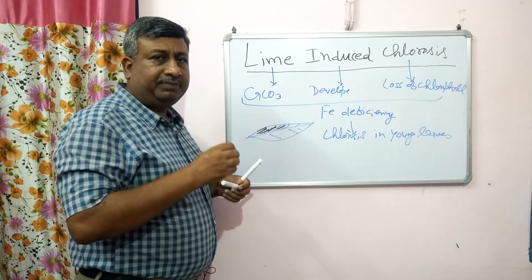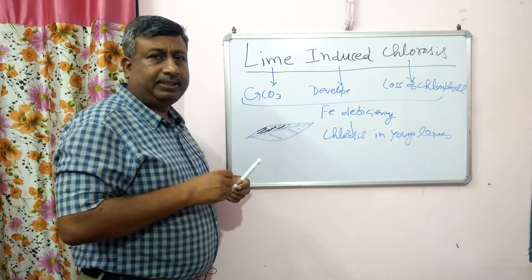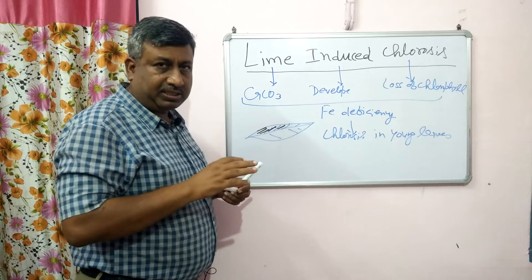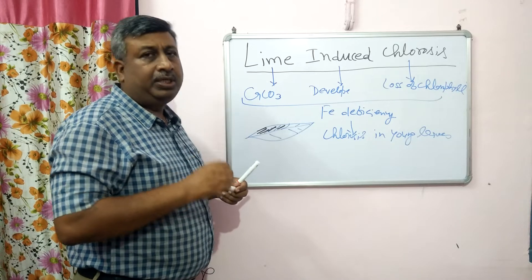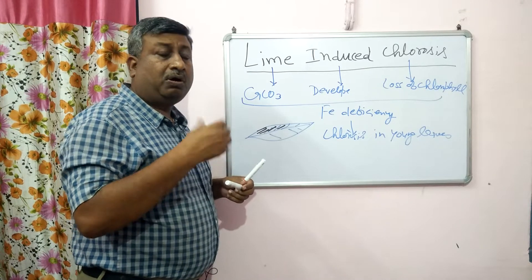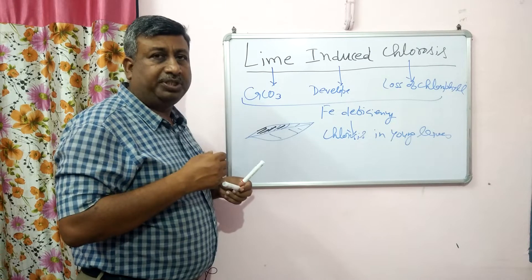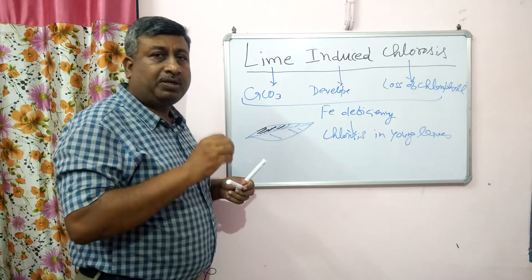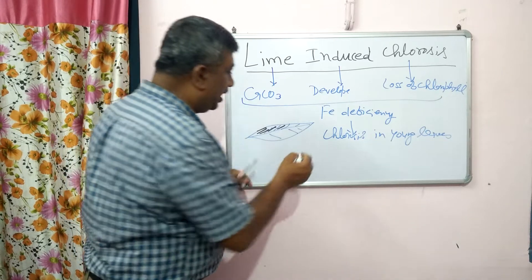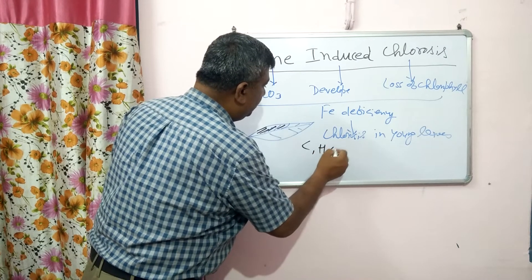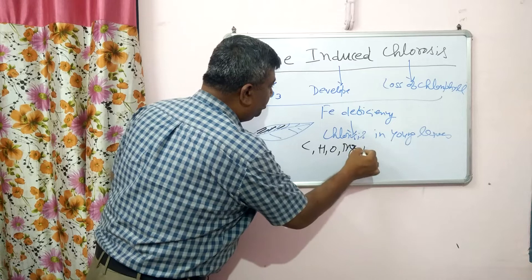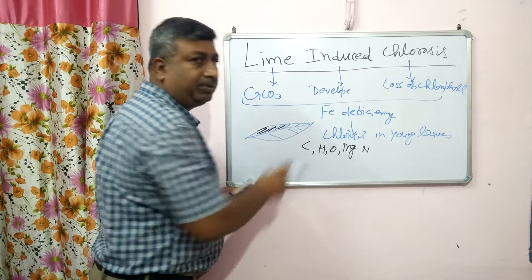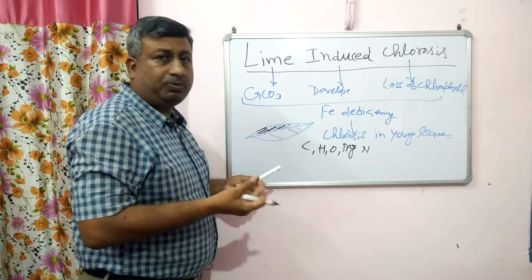Iron acts as an activator for enzyme activity, so iron presence is essential. If there is deficiency of iron, then there is no or less chlorophyll formation. Iron is not actually a part of chlorophyll — the parts of chlorophyll are carbon, hydrogen, oxygen, magnesium, and nitrogen. So whenever there is a deficiency of magnesium or nitrogen, there is loss of chlorophyll and chlorosis.